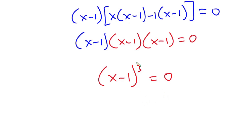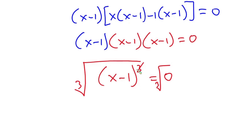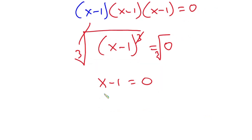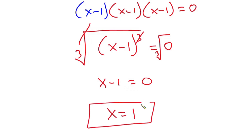Now we are looking for x, so we can take the cube root on both sides of the equation, so that the cube cancels the cube root. We have x minus 1 is equal to 0. Making x the subject, we have x equals 1. And this is our final answer.